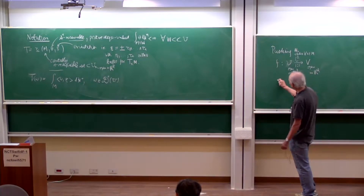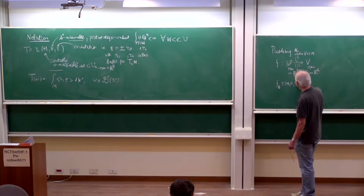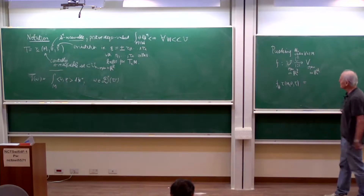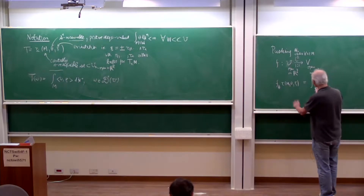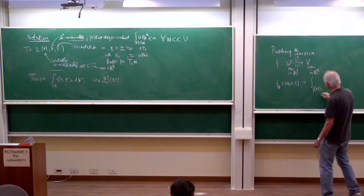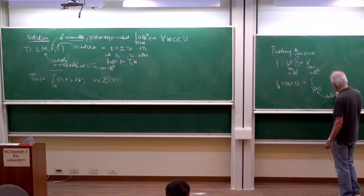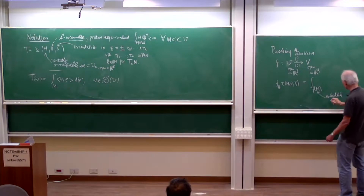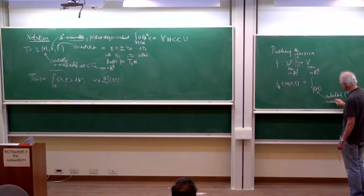Suppose f is C^1 to begin with, and let's suppose it's also one-to-one and has rank n at each point, so the induced linear map has rank n for every x in M. That's the simplest possible case. Then of course you know how to define f_sharp of tau(M, theta, xi). That would be the normal way of pushing forward — taking the image of a smooth manifold. In this case the image is a smooth manifold because of rank n and injectivity, so it's an embedded C^1 submanifold of V.